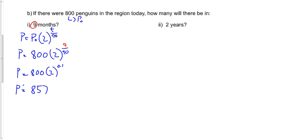Well, in 2 years, if our doubling time is given to us in months, our time has to be given to us in months, our actual time. So 2 years times 12 months in each year, that's going to equal 24 months.